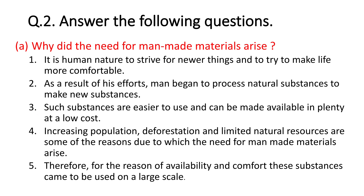Second point: as a result of his efforts, man began to process the natural substances to make new substances. For example, rubber is obtained from the natural plant, but we process it so that we get hard rubber and can use it in tires and erasers. As a result, we are always processing natural substances to make new substances.